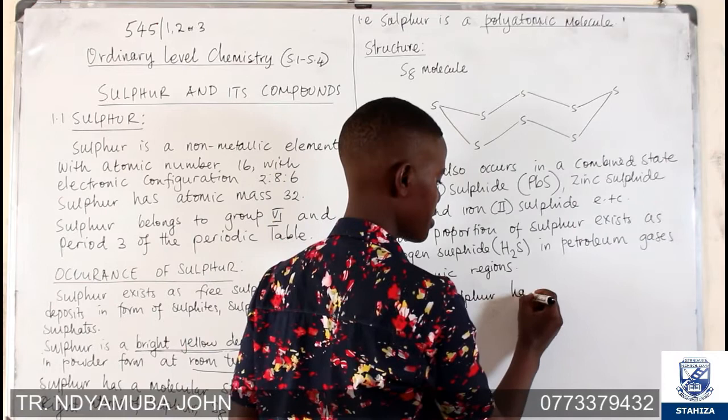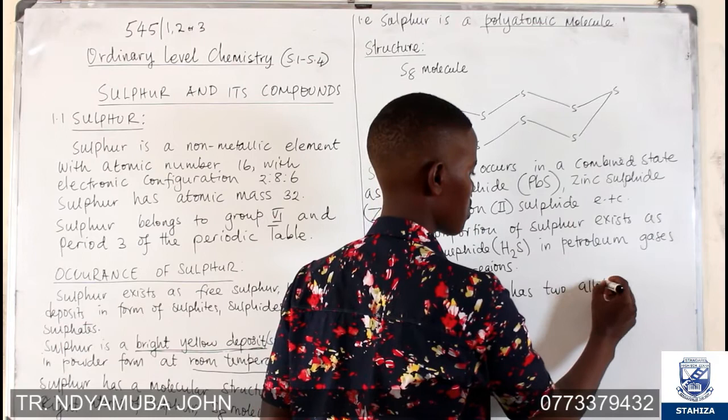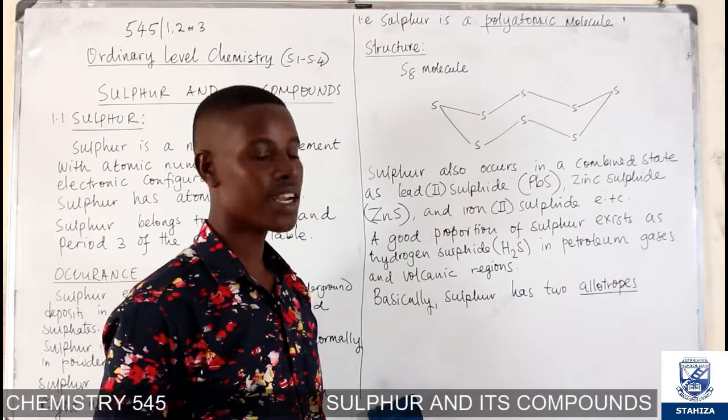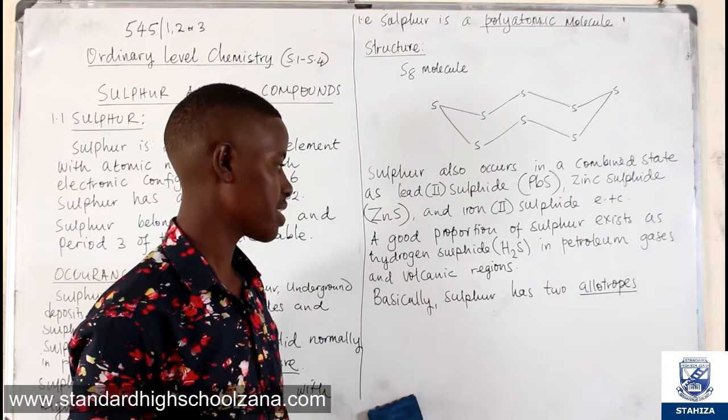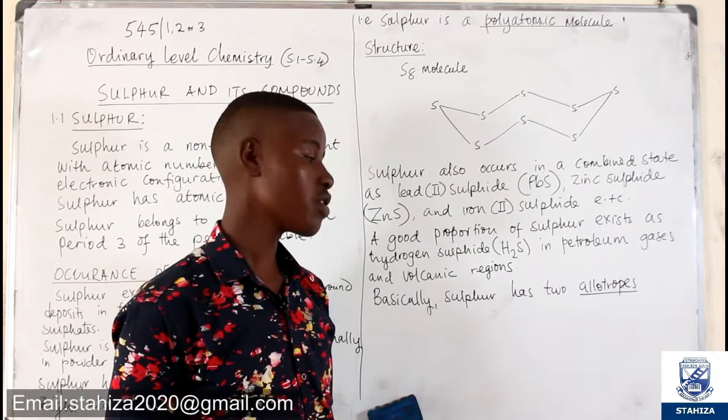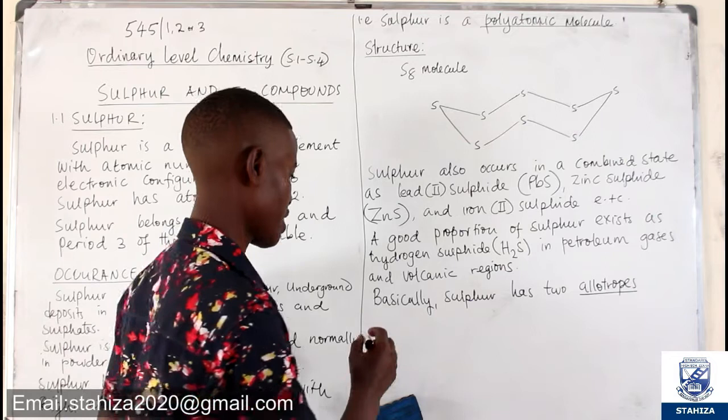Sulfur has two allotropes. When we talk about allotropes, we say that it is the existence of an element in more than one form, but with the same physical state and different chemical properties.